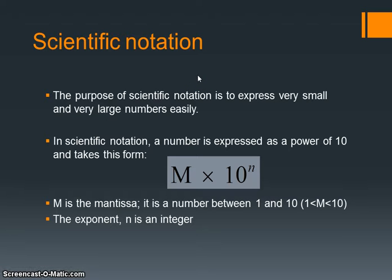In scientific notation, the main goal is to express your number as some number between 1 and 10, then we use a base 10 with an exponent. We call this number between 1 and 10 the mantissa. The exponent n is some integer.